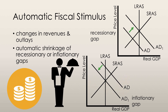Because revenues fall and outlays increase in a recession, the government budget provides automatic stimulus to shrink the recessionary gap. Revenues rise and outlays decrease in an expansion, and the budget provides automatic stimulus to shrink the inflationary gap. The graph on the slide shows the most ideal outcome of automatic fiscal stimulus — this does not generally occur. However, the gap will generally shrink, but long-run macroeconomic equilibrium is generally not achieved solely through automatic fiscal stimulus.